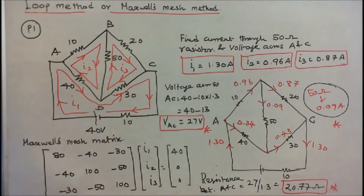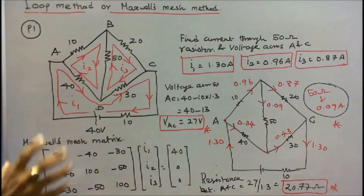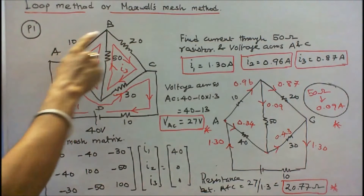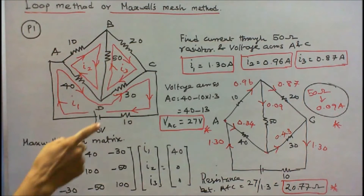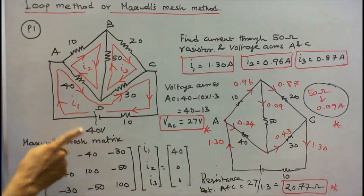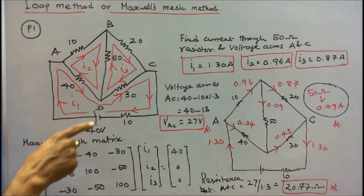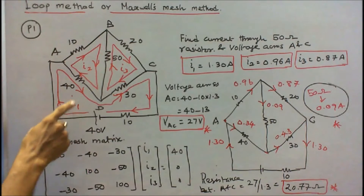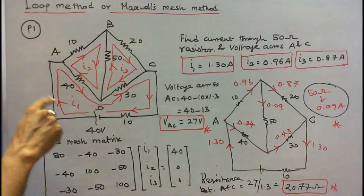Problem number one. Six resistors and one voltage source are connected as shown in the figure. There are six resistors: 10 ohm, 20 ohm, 30 ohm, 40 ohm, 50 ohm, and the source resistance is 10 ohm. The source voltage is 40 volts. There are three loops — loop one, loop two, loop three — with loop currents I1, I2, I3 in the clockwise direction.